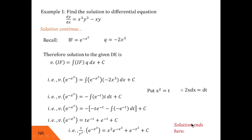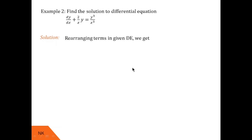Now let us see Example 2. The differential equation is dy/dx + (2/x)y = y³/x³. This is clearly in the Bernoulli form dy/dx + Py = Qy^n. We divide by y³ to get: (1/y³)·dy/dx + (2/x)·(1/y²) = 1/x³.